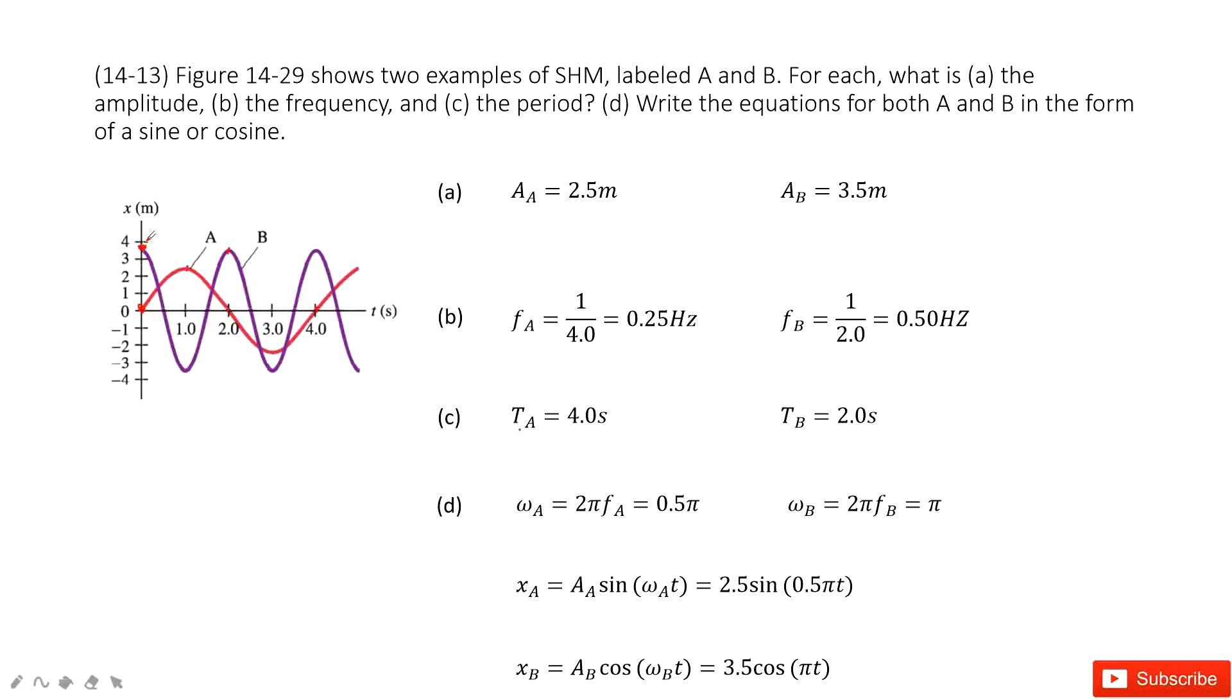Next it looks like we need to find the amplitude and the angular velocity. Amplitude is there. Now we look at omega, angular velocity.